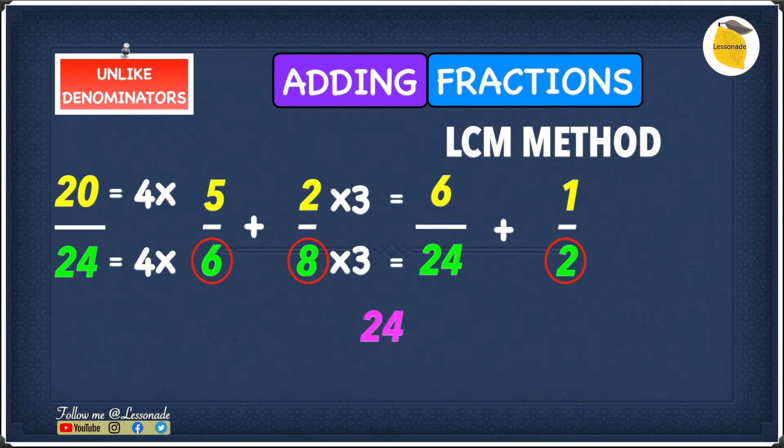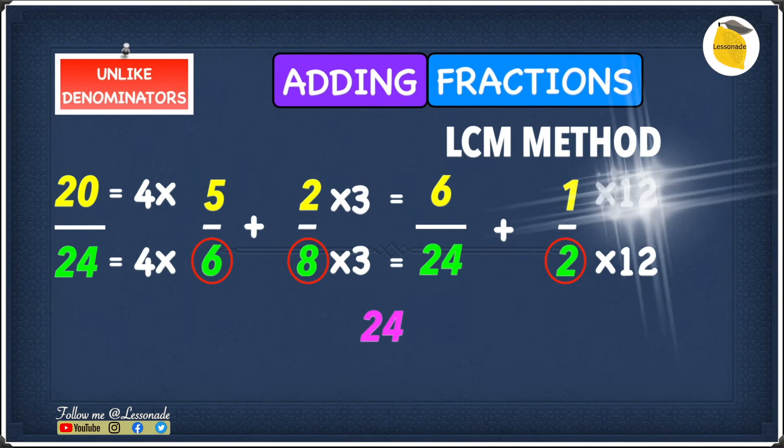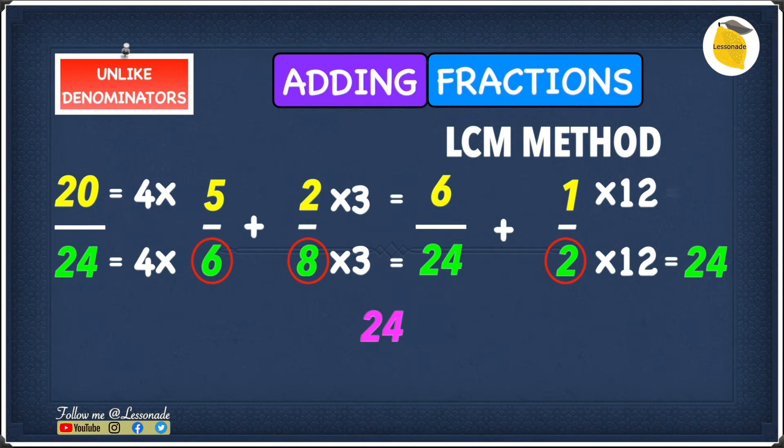We can move on to our final fraction which is 1 over 2. So what number do we have to multiply 2 to get to 24? And it is 12 because 2 times 12 will give you 24. We have to do the same thing with the top number. So 1 times 12. Now 2 times 12 will obviously give you 24 as we said before and 1 times 12 will give you 12. So this means we get 12 over 24.